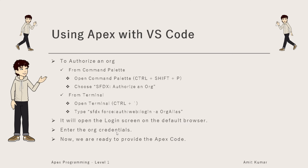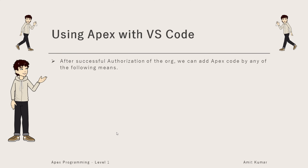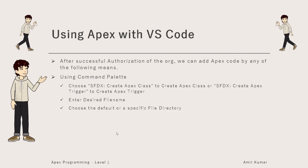Once you do that and your org authorizes with your Visual Studio Code project, you are ready to write Apex code. After successful authorization, you can add Apex code by using the command palette. You need to search for 'SFDX: Create Apex Class' if you are creating a class, or 'SFDX: Create Apex Trigger' if you want to create a trigger.